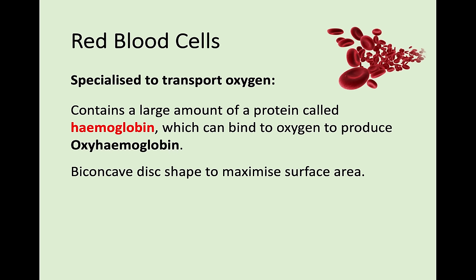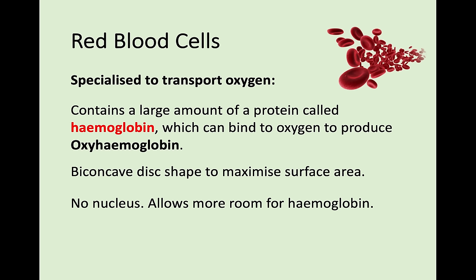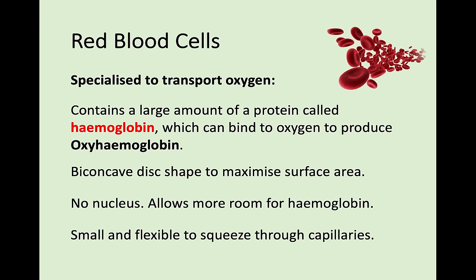Red blood cells also have a strange biconcave disc shape - like a donut depressed in the middle, concave on each side. This maximises surface area so you can transport as much oxygen as possible. They also have no nucleus, so there's even more room for haemoglobin and therefore oxyhaemoglobin. Lastly, they're small and flexible so they can squeeze through capillaries - you don't want them getting stuck anywhere as that'd be a clot, which is bad.